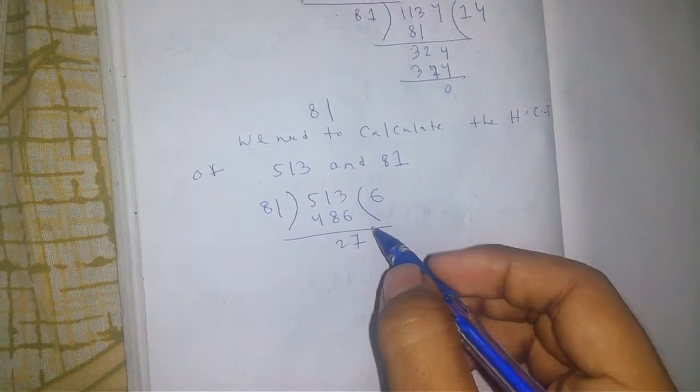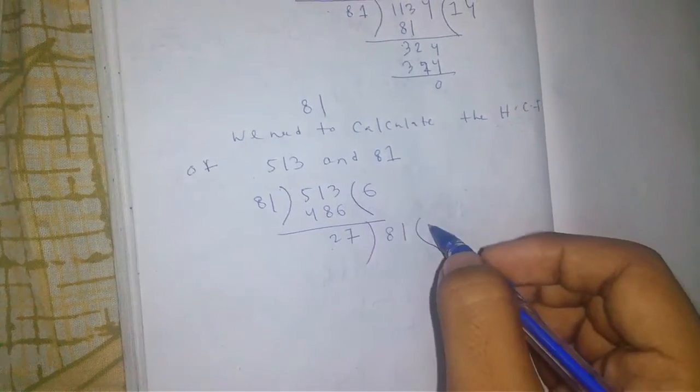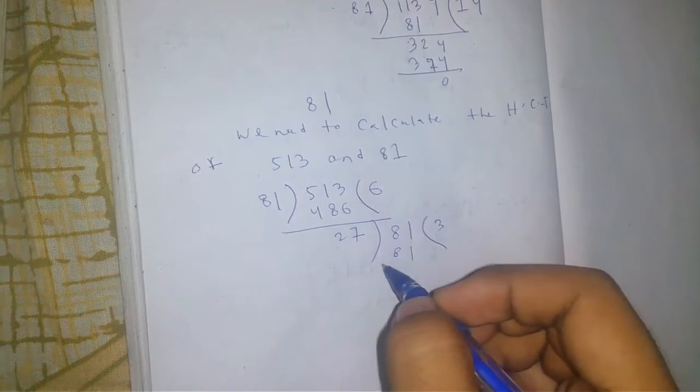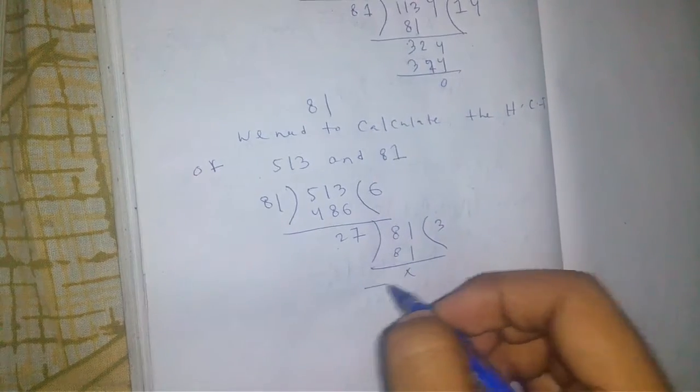Now 81 becomes the dividend. 27 into 3 equals 81. The remainder is 0. Division is completed.